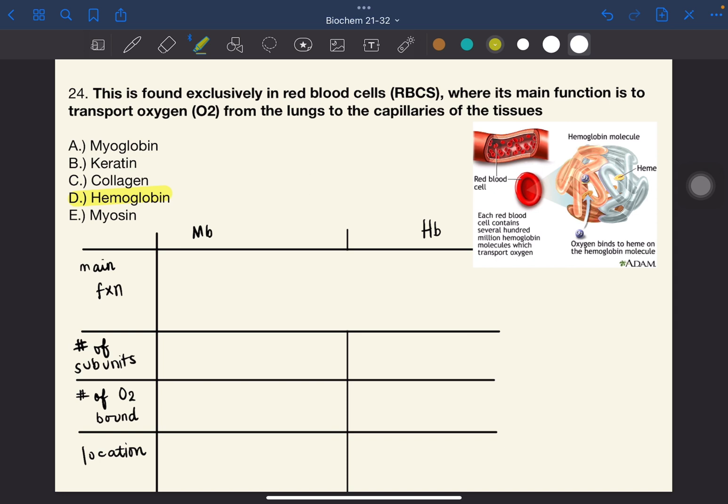Now let's compare myoglobin and hemoglobin. Myoglobin and hemoglobin are both oxygen carriers. However, myoglobin has only one subunit, meaning only one oxygen can bind. Hemoglobin, on the other hand, has four subunits, so four oxygen molecules. And these have different locations. Myoglobin is found in the heart and skeletal muscles, while hemoglobin is found exclusively in the red blood cells.